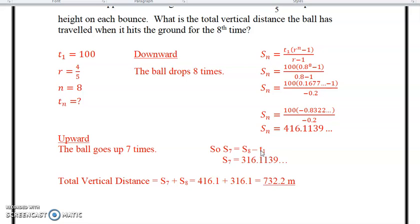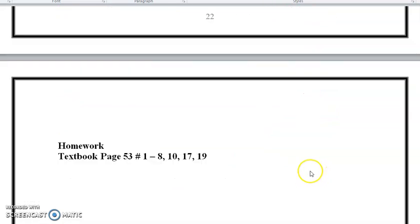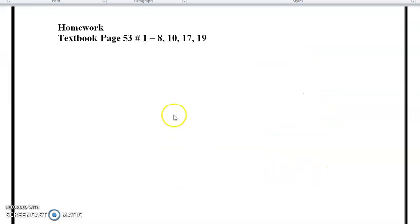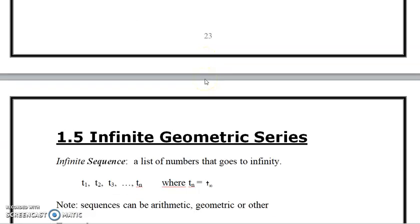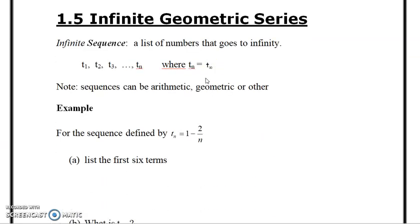When we get to two distances, we simply add them together and we get 732. So homework is there: section 1.4, page 53, questions 1, 8, 10, 17, and 19.